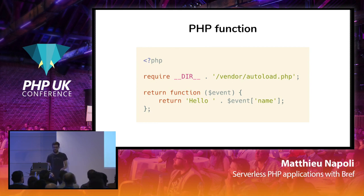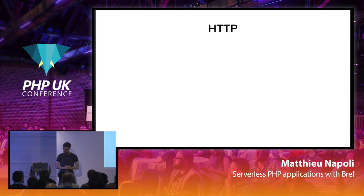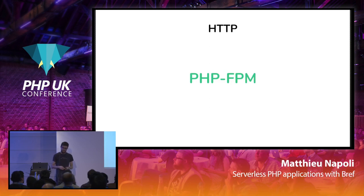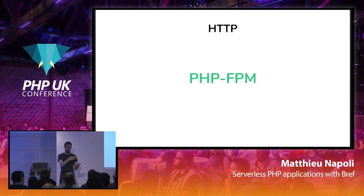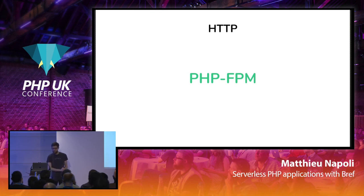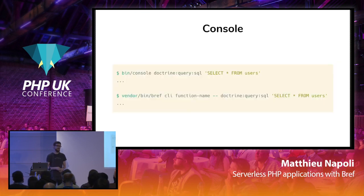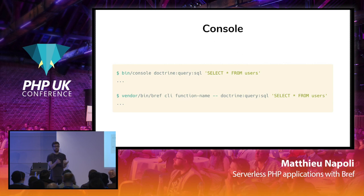If you've never used serverless before, I really recommend you start with the HTTP runtime. That way you can run APIs and websites, and the great thing is that it runs PHP-FPM on Lambda. So your favorite application framework — Symfony, Laravel, whatever — runs the same way. There's index.php called for every request. You have $_GET, $_POST, you can set headers and cookies — it works the same. The third runtime is the console runtime: it helps you run Symfony console commands or Laravel artisan commands on Lambda, since you don't have SSH access. If you want to run database migrations or administrative commands, this will help you.